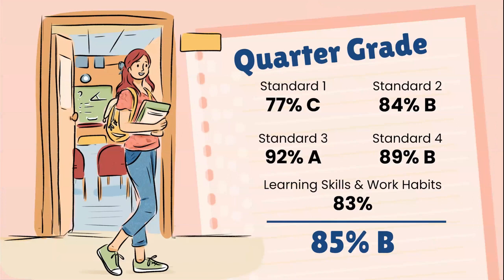At the end of the quarter, you should have grades for multiple standards. Most classes have between two and five standards, and not every standard will be assessed every quarter. In this student's case, they had a 77 percent C on standard one, an 84 percent B on standard two, 92 percent A on standard three, and an 89 percent B on standard four. You're also going to get a grade for your learning skills and work habits. If you want an overall grade, those grades get averaged and show up in this case as an 85 percent B.